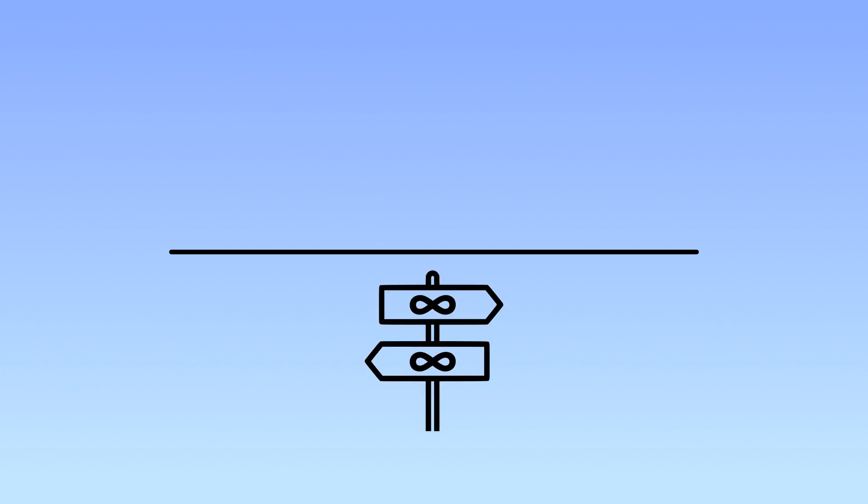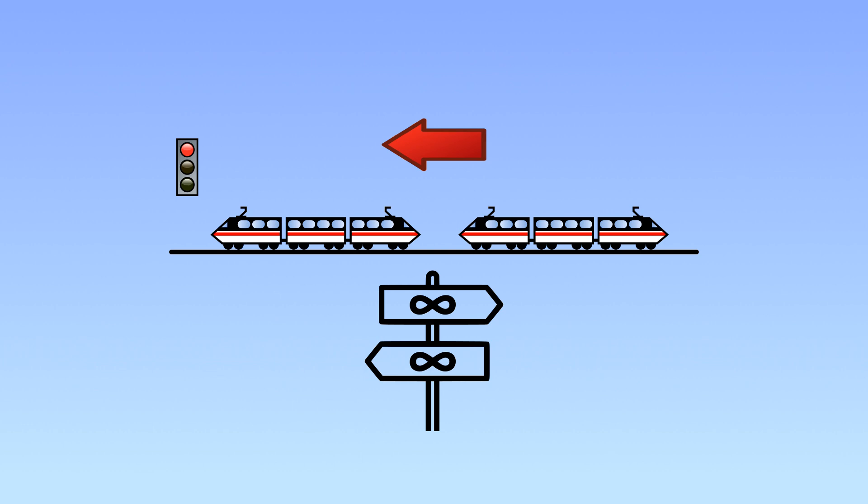Starting with our zero-dimensional universe, any direction would really be orthogonal to it. We'll just pick one and extrude the universe in that direction. Now we have a line, and it goes infinitely in each direction. This is a one-dimensional universe. You can think of this universe like a train track. You can go forward and backward, but if the line ahead is blocked, you can't go around.